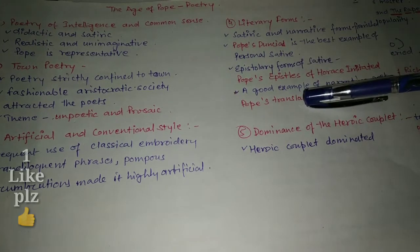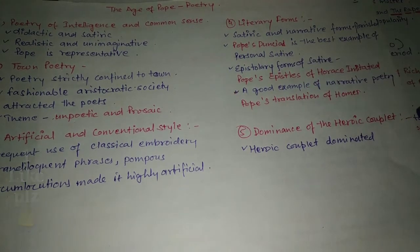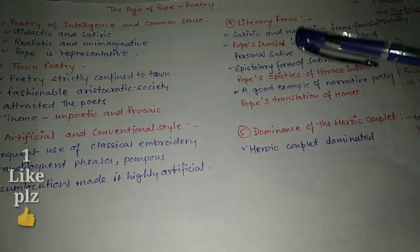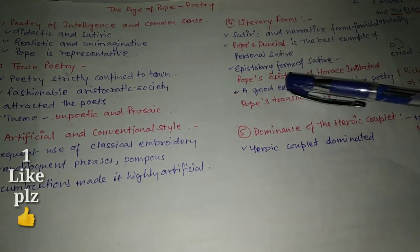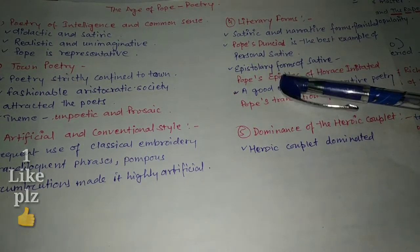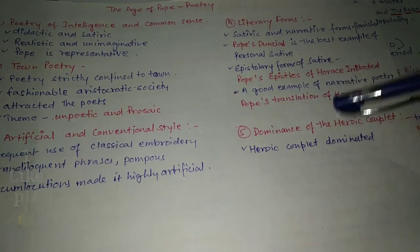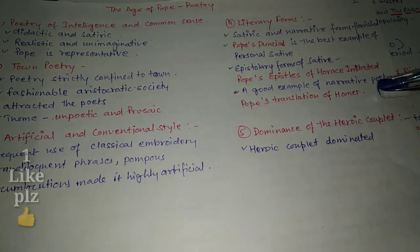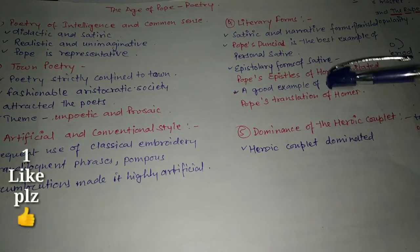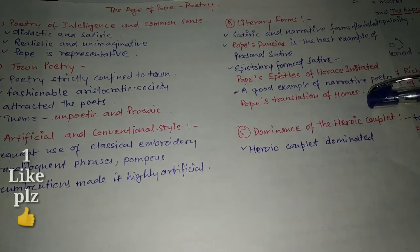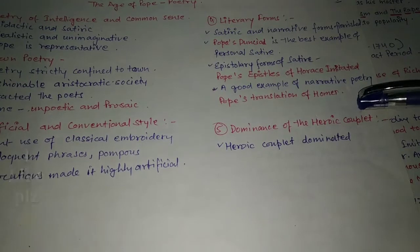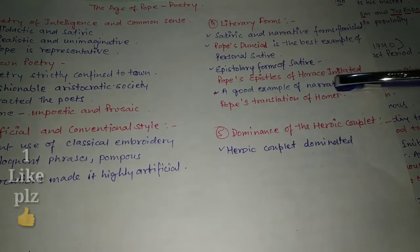Literary forms — satire and narrative forms flourished. We got to see satiric work. Pope's Dunciad is the best example of personal satire. The epistolary form of satire is also seen in Pope's Epistle to Horace, which imitated Horace.